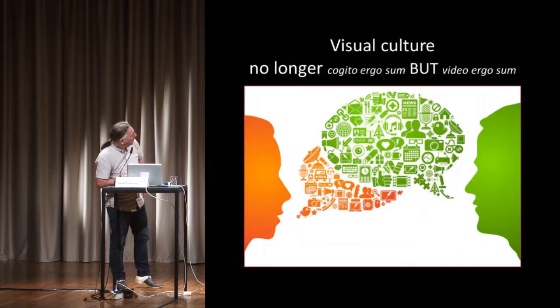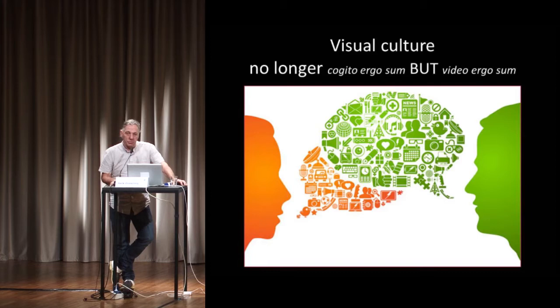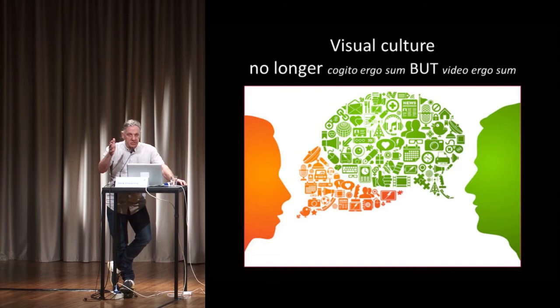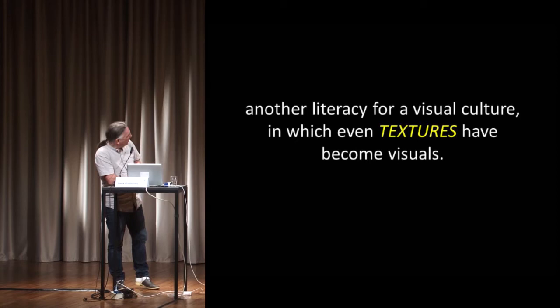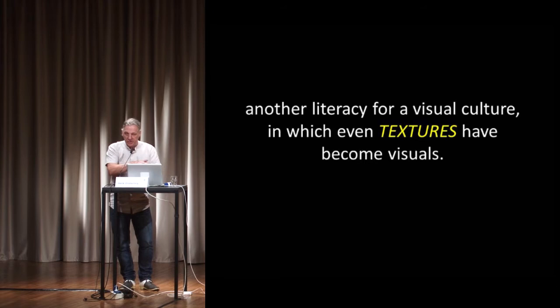We are living in a visual culture. No longer cogito ergo sum, but video ergo sum. We are here because we totalize our views, and in totalizing our views, we use images. So we need another literacy for a visual culture in which even texts have become visuals. The etymology of texture is that you weave things into each other — it's about networks.